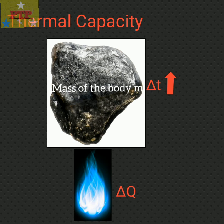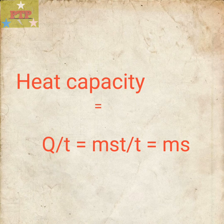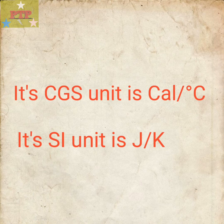The rise in temperature of the body depends upon the mass of the body and the specific heat capacity of the body. The heat capacity is given as Q divided by t, where Q is the heat given to the body and t is the rise in temperature. Since Q equals ms delta t, we get heat capacity equals ms — mass of the body times specific heat capacity. Its CGS unit is calorie per degree Celsius.